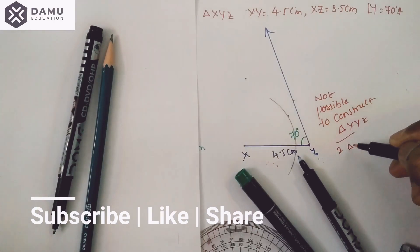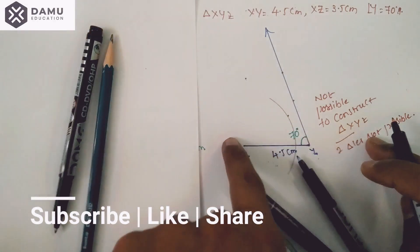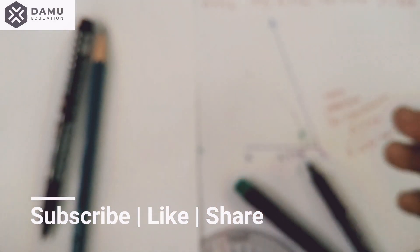Two triangles are not possible to construct. We are not even getting one triangle, so how will we get two triangles? Thanks for watching, please subscribe.